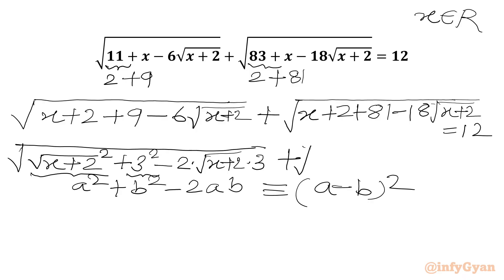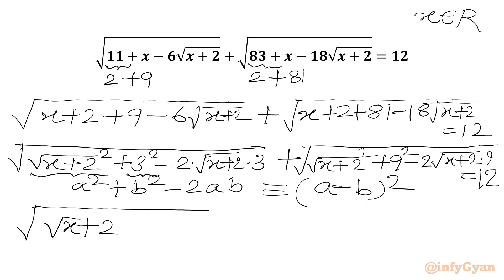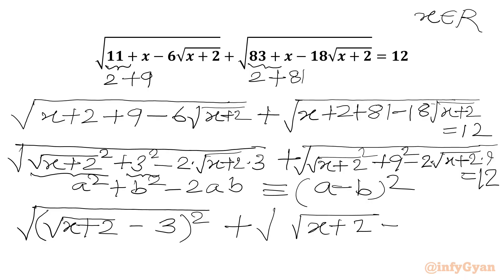Similarly for the second term: x plus 2 equals square root of x plus 2 whole squared, and 81 is 9 squared. The cross term is 2 times square root of x plus 2 times 9, which gives 18. Applying the same algebraic identity, we write square root of x plus 2 minus 3 whole squared, plus square root of x plus 2 minus 9 whole squared.